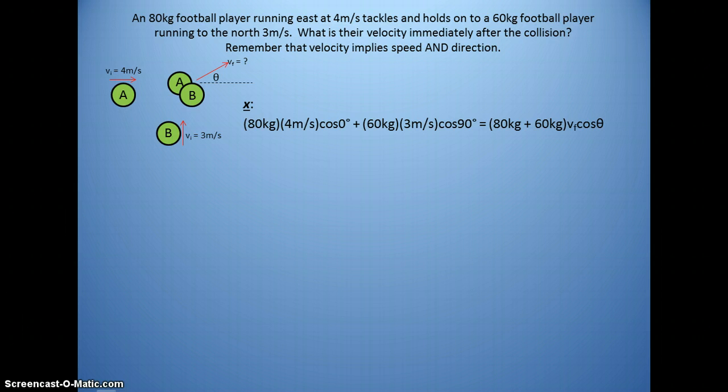Like instead of writing 60 times 3 times cosine 90, you just may put 0 there because cosine of 90 is 0. Afterwards, they are stuck together. So I've added their masses. And they have a final velocity at some unknown angle. So we've written that as VF cosine theta. The best you can do is reduce this down to VF cosine theta equals 2.29 meters per second. We have one equation here with two unknowns.